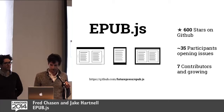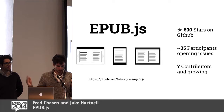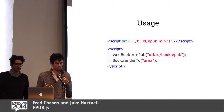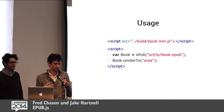A few things about EPUB.js: it's open source, a free BSD license, 600 stars on GitHub and hopefully growing, with lots of people participating and new features being added all the time. Fred's going to talk a little bit more about EPUB.js and what web books can do for not only open annotation but just in general.